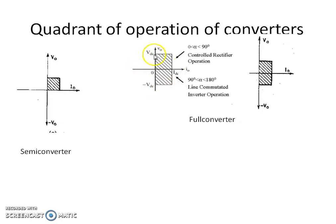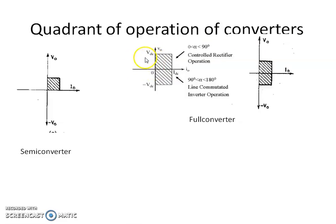In the second quadrant, voltage is positive but output current is negative. Therefore, output power is negative, so it is also an inversion operation. The second quadrant operation is inversion in the forward direction.